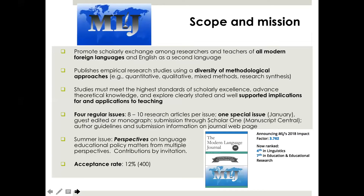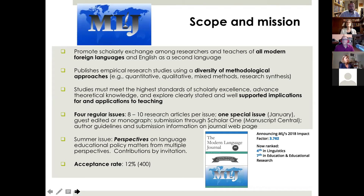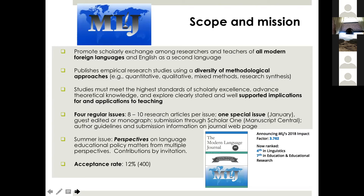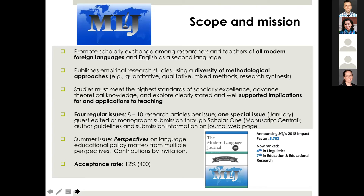When you're thinking about submitting a manuscript to a journal, the first thing you need to have into account is the scope and mission of the journal. In the case of MLJ, we publish the scholarly exchange among researchers and teachers of all modern foreign languages, including English as a second language. We're especially interested in studies on languages other than English, and we typically publish about 50-50 between studies about English and other languages.